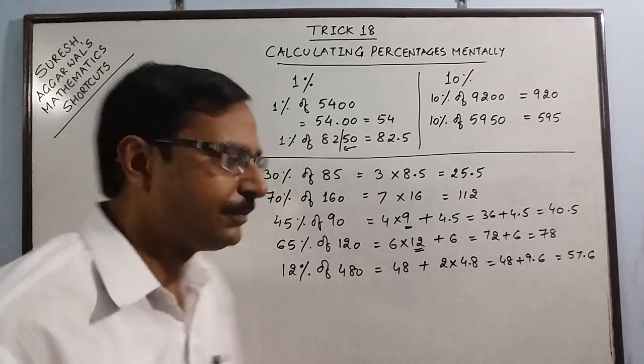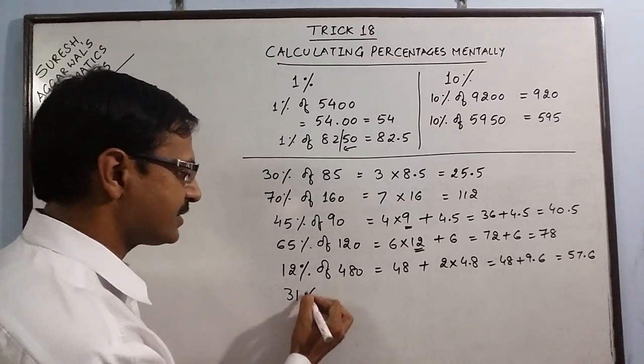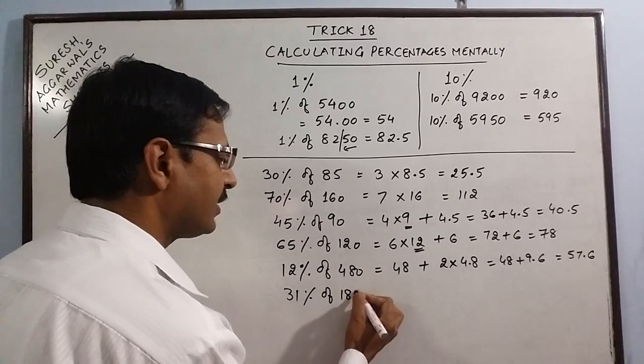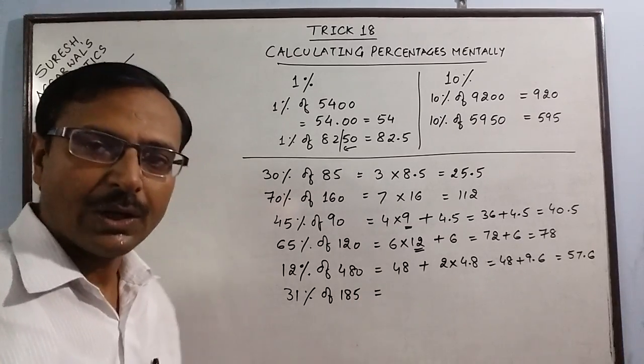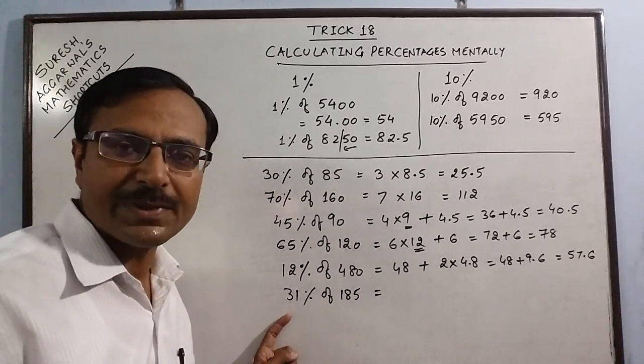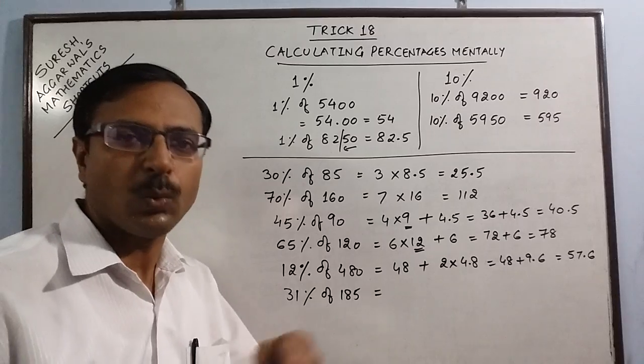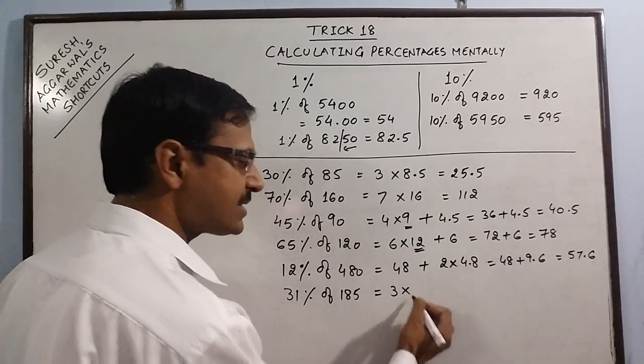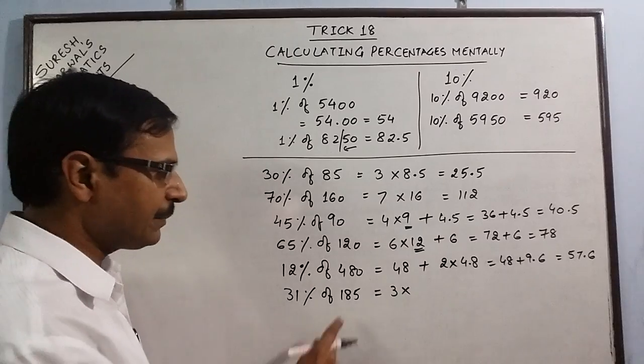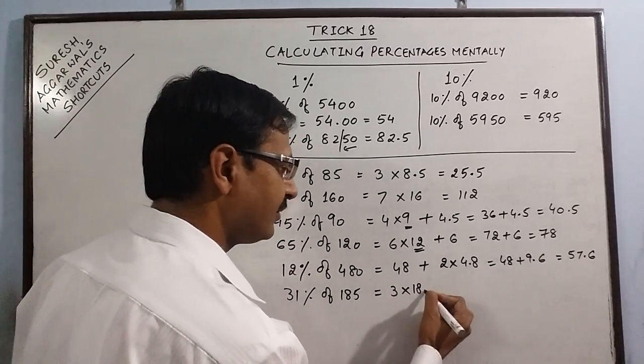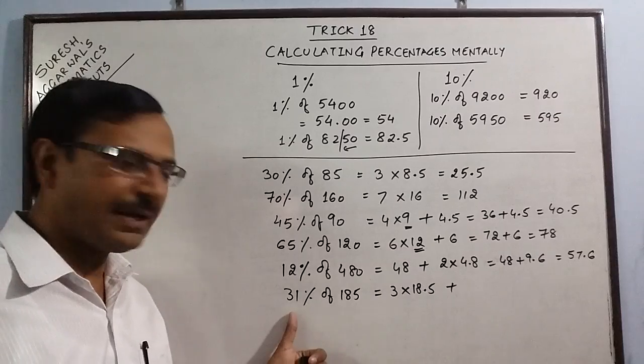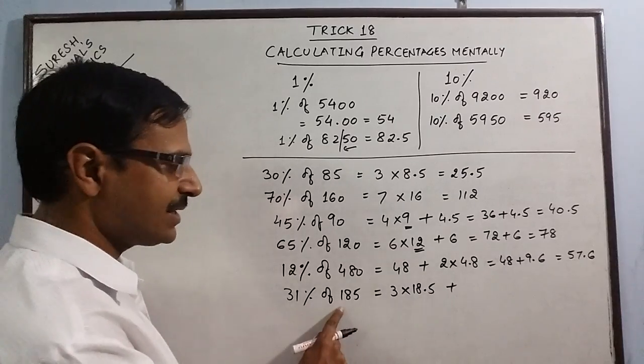Final example. Say I have to calculate 31% of any quantity. I take a typical quantity, say 185. Now consider this 31% as 30 plus 1%. Now 30%, 3 into 10%, 10% of this is 18.5. This is 30%, plus remaining 1%, 1% is 1.85.